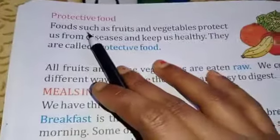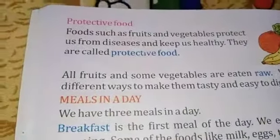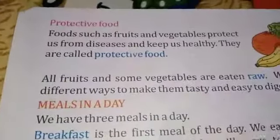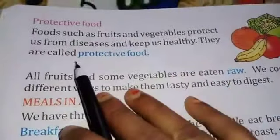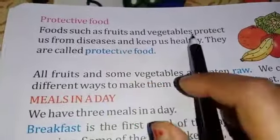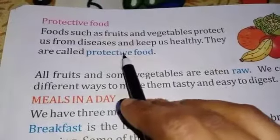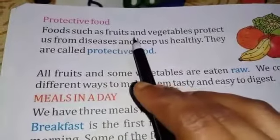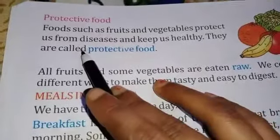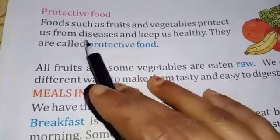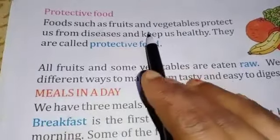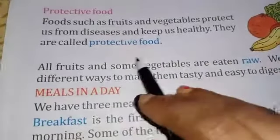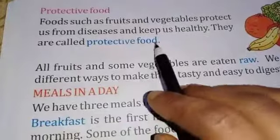The third group is protective food — यानि सुरक्षात्मक भोजन, शरीर को बीमारियों से बचाने वाले भोजन। Foods such as fruits and vegetables protect us from diseases and keep us healthy. So they are called protective food.